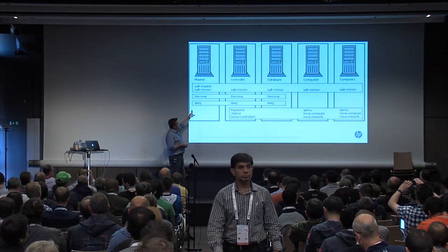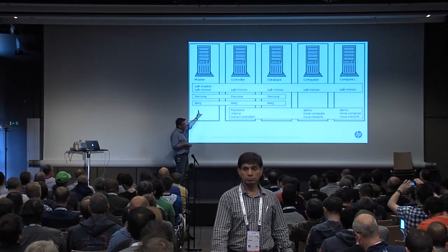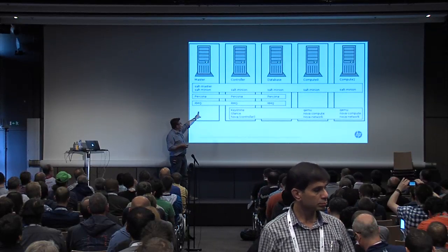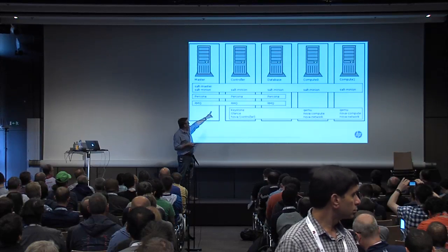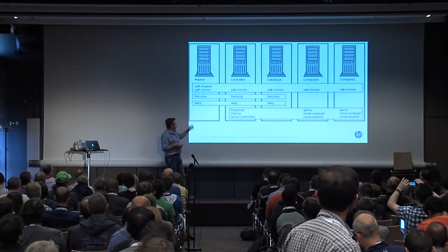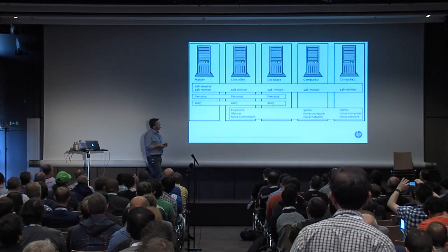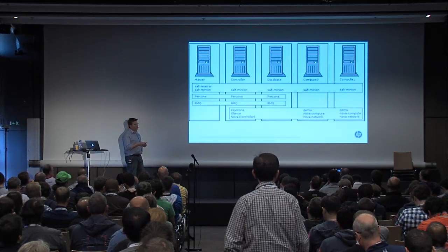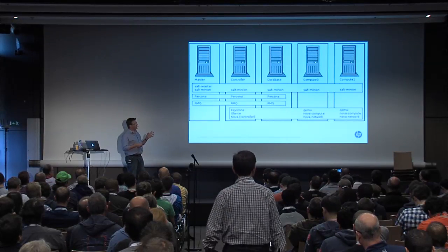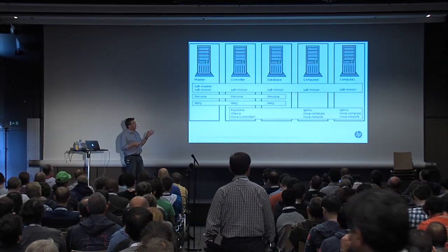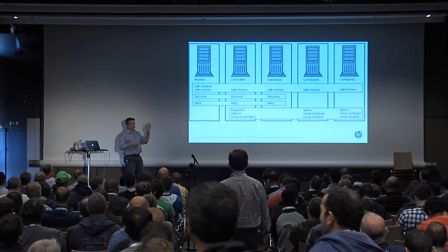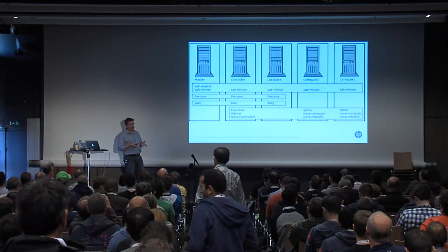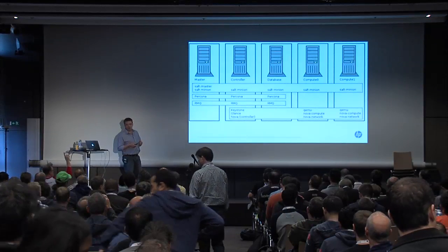There are a couple of minor differences between this and production. In production, we span the database and the messaging cluster across a different set of nodes, but they're still separate from the compute nodes. This is just to reduce the virtual machine count that we need on a developer workstation to make this work.